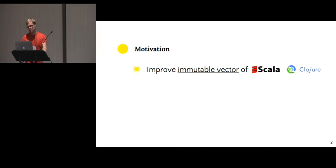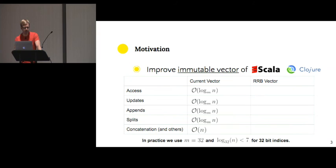Our motivation behind this data structure was to improve the current implementation of the immutable vector that we have in Scala. It also exists in Clojure. This data structure has a logarithmic access time, update time, append on either end, and split. But it has a bad concatenation and some other structural modification, like inserting or removing elements from within the vector. In practice, we use an M of 32, which makes the logarithm bounded by seven if we use 32-bit integers as indices. So we have an effectively constant time on our bounds. And the idea is to improve it to logarithm bounds all around.